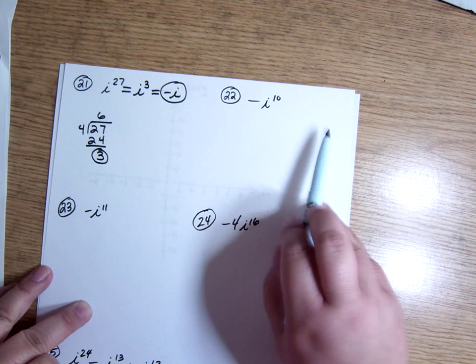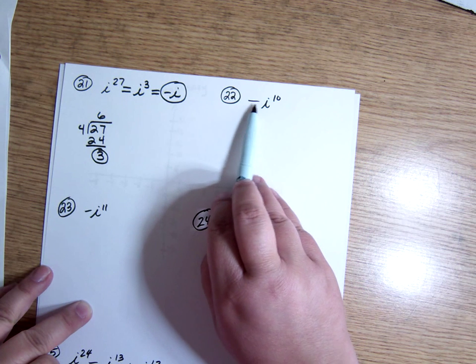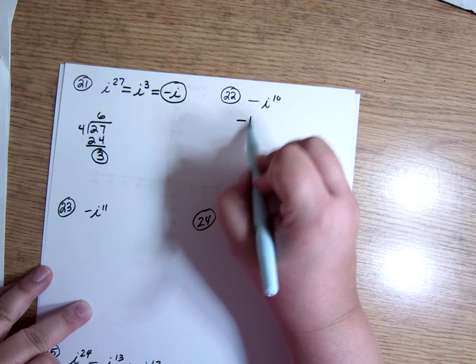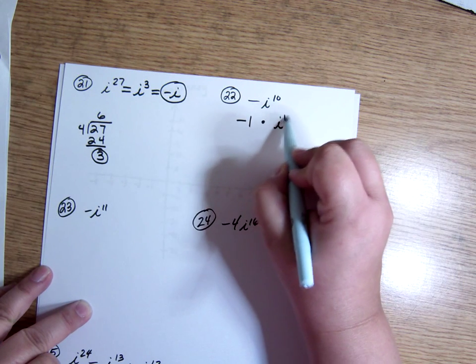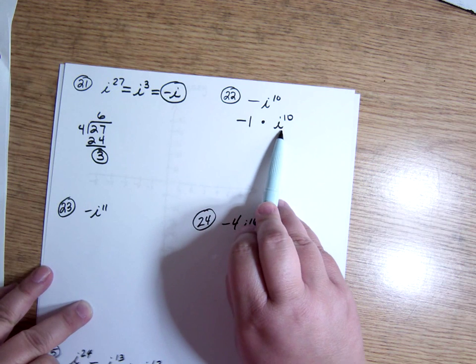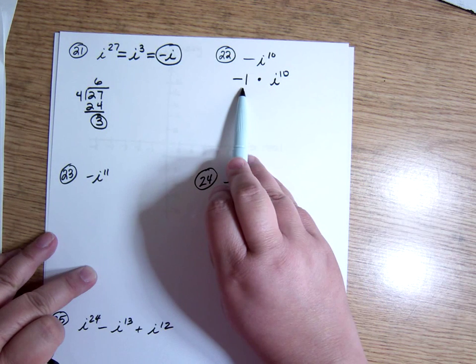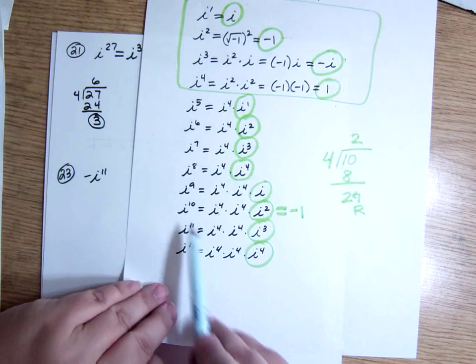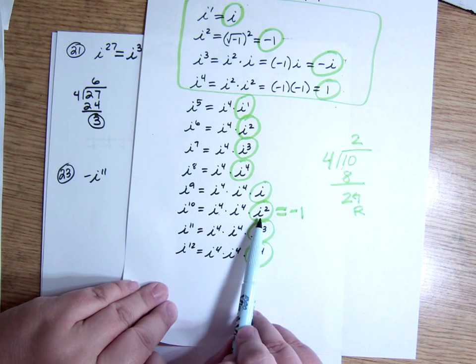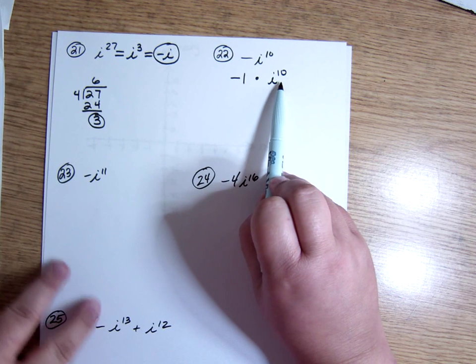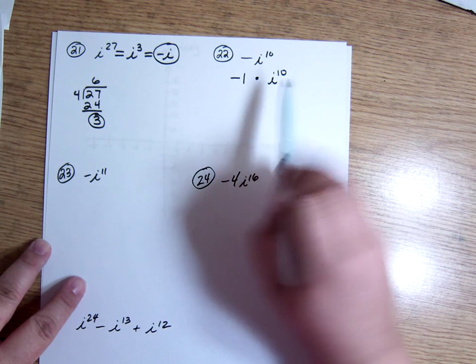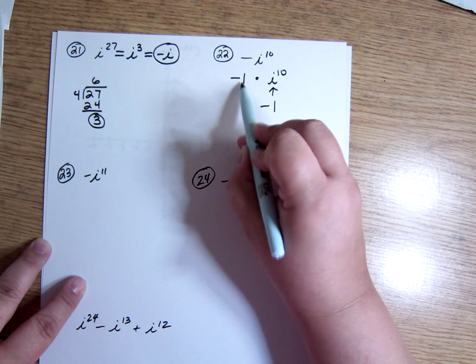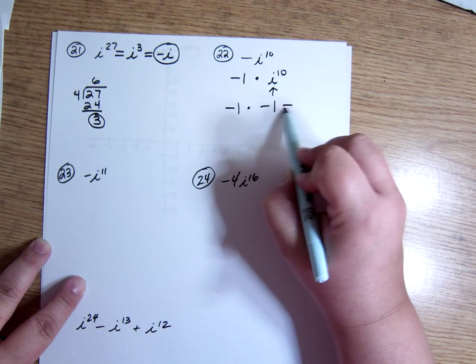Now, here we go again. Keep in mind, I'm not raising that negative to the tenth power. So, it's like I've got negative 1 times i to the tenth. So, first I need to figure this out, and then I need to figure out how that negative 1 affects it. i to the tenth, we just talked about a second ago, was i squared. 10 divided by 4 leaves me a remainder of 2. So it's the same as i squared, which is negative 1. So I have negative 1 times negative 1, which is 1.